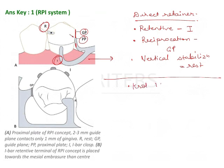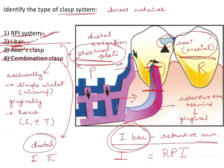A few additional facts about RPI: it was introduced by Crowell in 1973 and later developed by Crotocqueville. The I-bar is positioned more towards the mesial side — towards the mesial embrasure rather than the center. The three components are R, P, and I, and you must remember the function of each. The answer to the question is the RPI system.